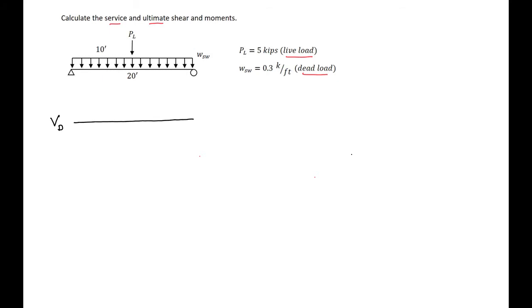We have a 0.3 kip per foot dead load applied over 20 feet, giving a total force of 6 kips, with half going to each support — so we have a 3 kip reaction at the left support. The slope of the shear diagram equals our distributed load, going linearly down to negative 3 kips, then back up 3 kips at the right reaction.